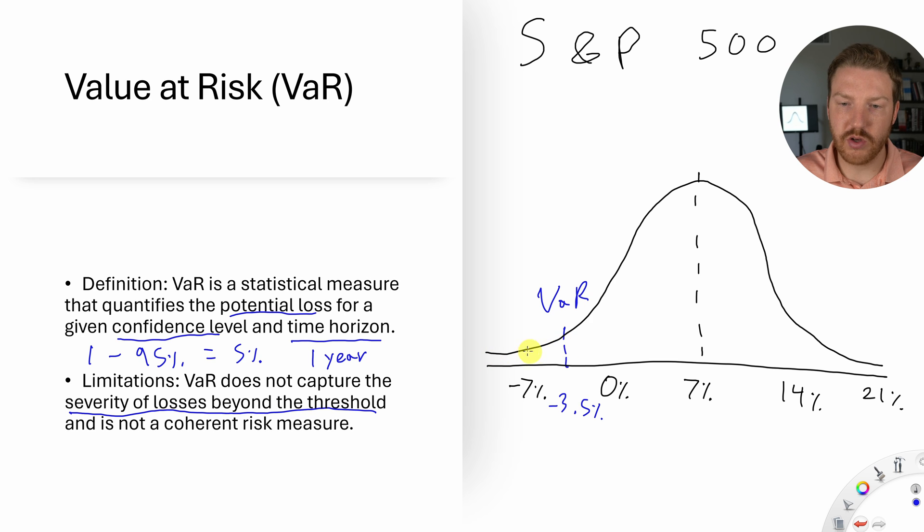So what if instead of looking like this, our distribution actually looked like this? We're going to take away this sort of normal look of this curve, and let's say this falls off really quick, super low, and then there's more outcomes that happen in this tail. Well, our VaR is not going to change at all because this might still be the 5th percentile cutoff.